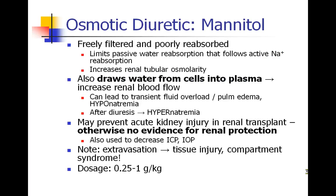The next diuretic I want to speak about is mannitol. Mannitol is an example of an osmotic diuretic. Mannitol is filtered freely into the kidney and is very hard to reabsorb. As a result, water cannot be absorbed out of the kidney back into the circulation because of the large amount of osmotic particles of mannitol that exist inside the kidney. Normally water would follow sodium, but now we have an osmotic force tugging the water back into the kidney and limiting reabsorption by increasing the renal tubular osmolarity.